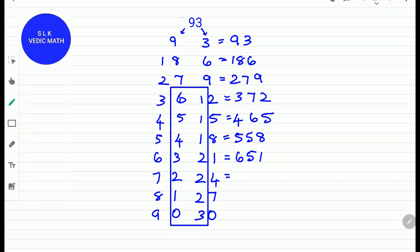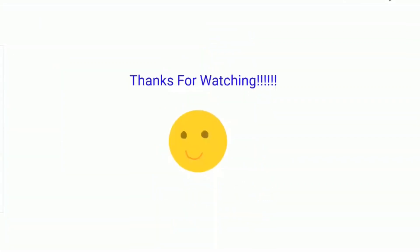For 93 times 7, we add 2 plus 2 which is 4. So 93 times 7 is 744. For 93 times 8, we add 1 plus 2, so 93 times 8 is 837. For 93 times 10, we add 0 plus 3 which is 3 and write down the 9, the 3 and the 0. Thanks for watching!